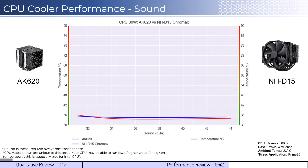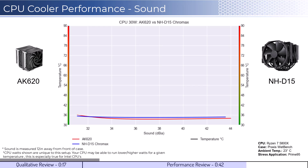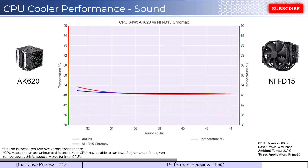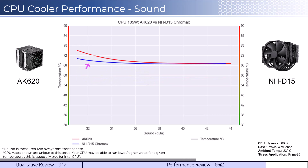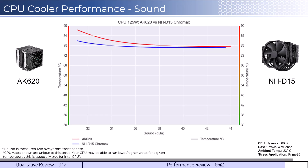For the second set of comparisons, we will look at the performance for a given noise level. The graph shown has noise on the bottom axis, while keeping temperatures on the side axis. Note that lower is still better for this graph. When comparing the coolers by normalized noise levels, we see that both coolers perform similarly across comparable noise levels. And as we increase the watts to 105, we can see that the Noctua NH-D15 begins to outperform at lower decibel levels, but the coolers perform similarly after approximately 36 decibels. As we increase the watts to 125, we see that this trend continues.